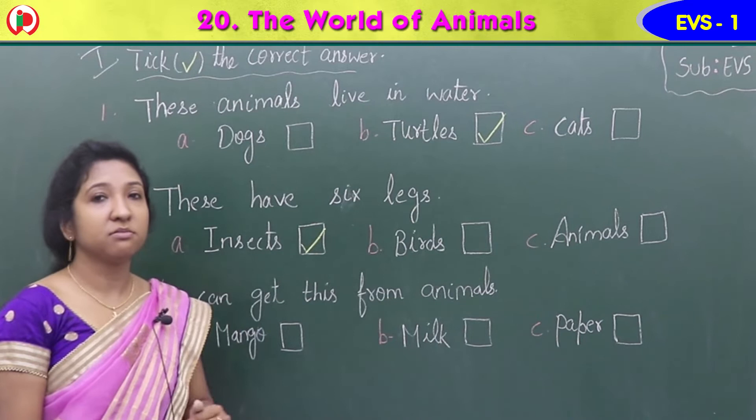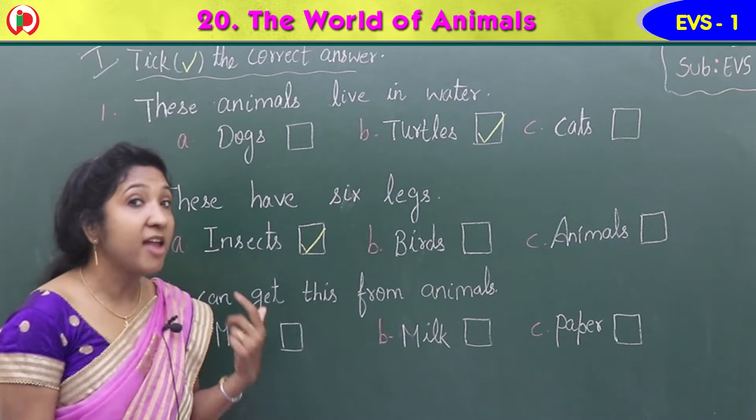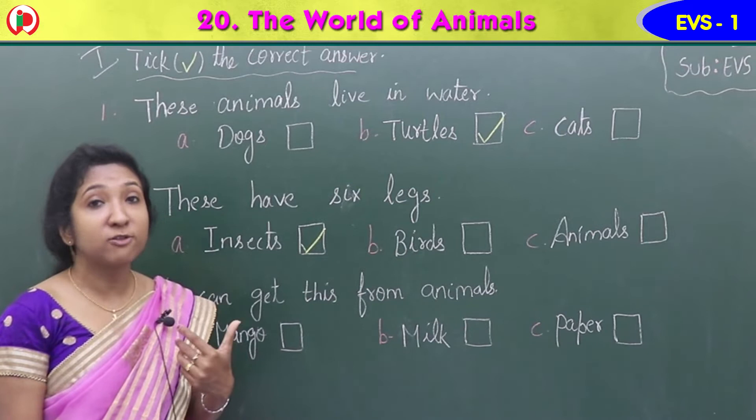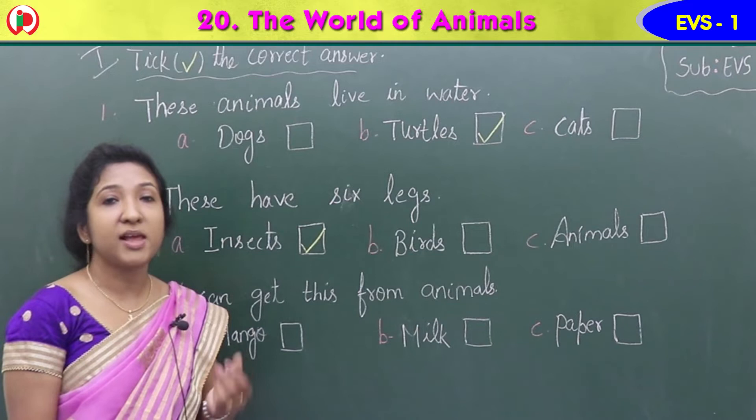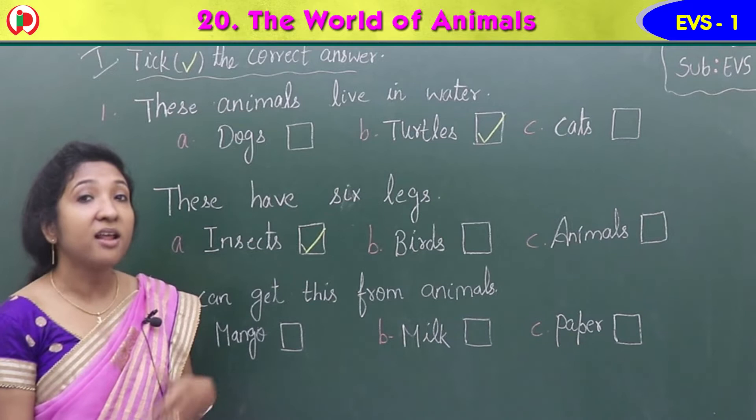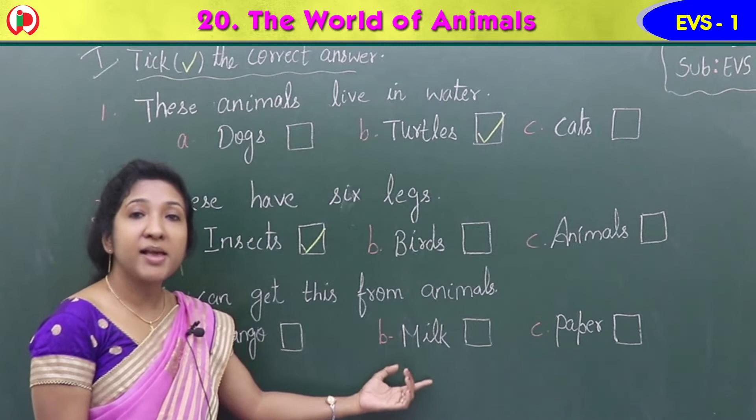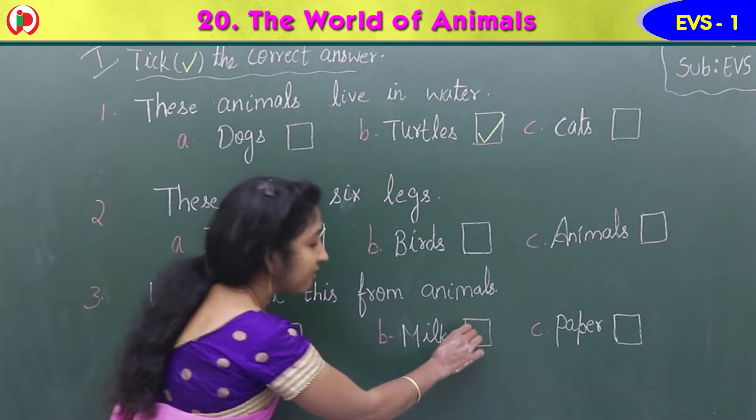Among these, which one do we get from animals? We learned about animals which are useful to us — useful animals or domestic animals. These animals give us eggs, milk, meat, wool, etc. Domestic animals give us milk. Option B: milk, M-I-L-K, is the correct answer.